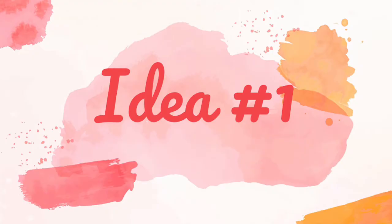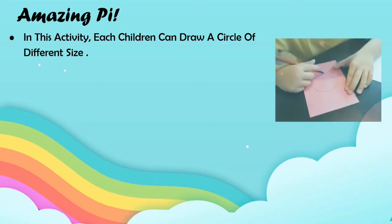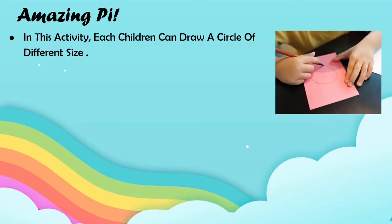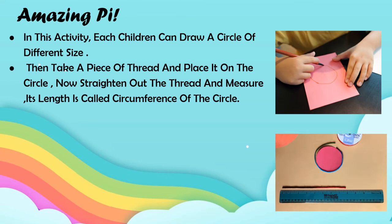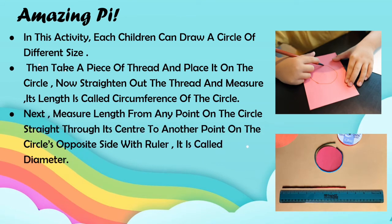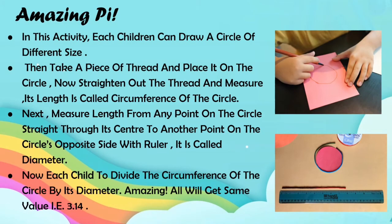Idea 1: Amazing Pi. In this activity, children can draw a circle of different sizes. Then take a piece of thread and place it on the circle. Now straighten out the thread and measure — its length is called the circumference of the circle. Next, measure the length from any point on the circle straight through its center to another point on the circle's opposite side with a ruler. Its length is called the diameter.